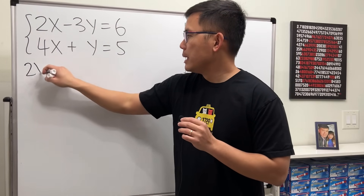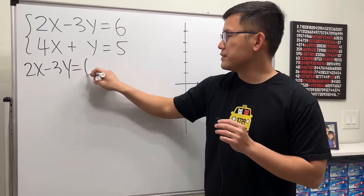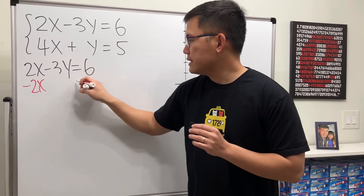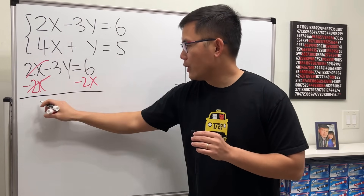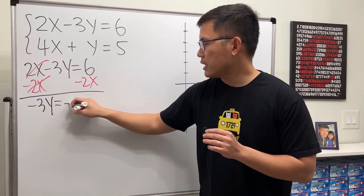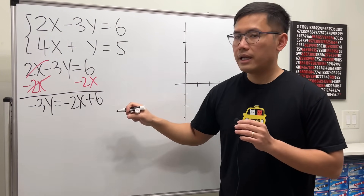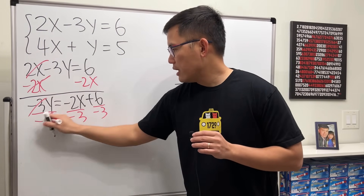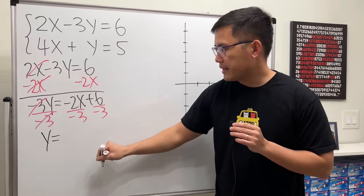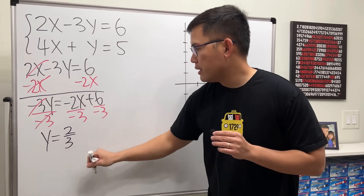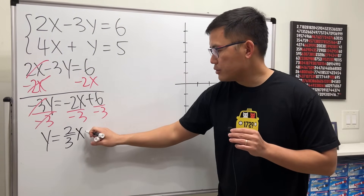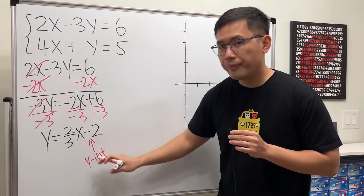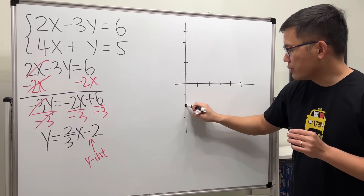Let's graph 2x minus 3y equals 6 first. To do so, let's put this into y equals mx plus b form. That's minus 2x on both sides, and then we will have negative 3y equals negative 2x plus 6. Then we are going to divide everybody by negative 3, and we will get y equals positive 2 over 3 x. Then 6 divided by negative 3 is negative 2. So here, we know the y-intercept is at negative 2. We go to the y-axis and go to negative 2. That's our first point.